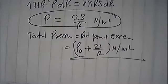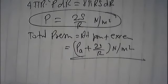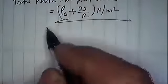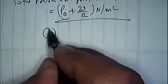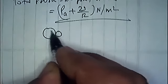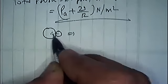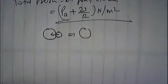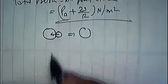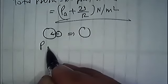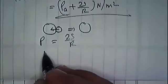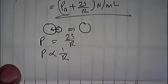Explain why does a small drop or bubble merge into a larger one? The excess pressure is 2T upon r, so excess pressure is inversely proportional to radius.